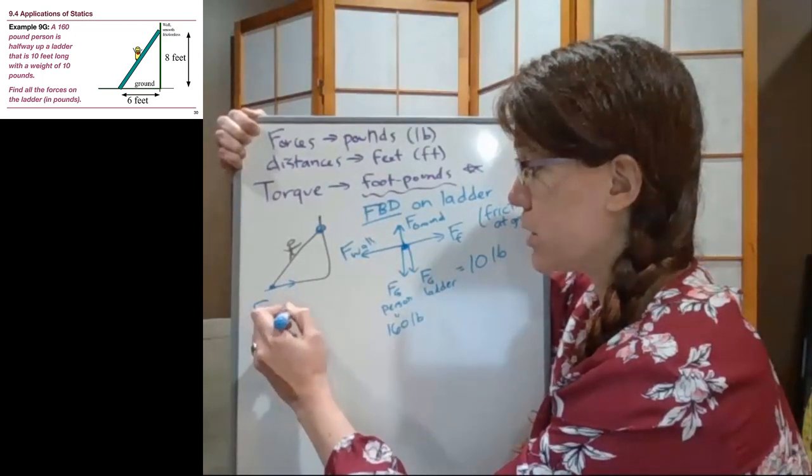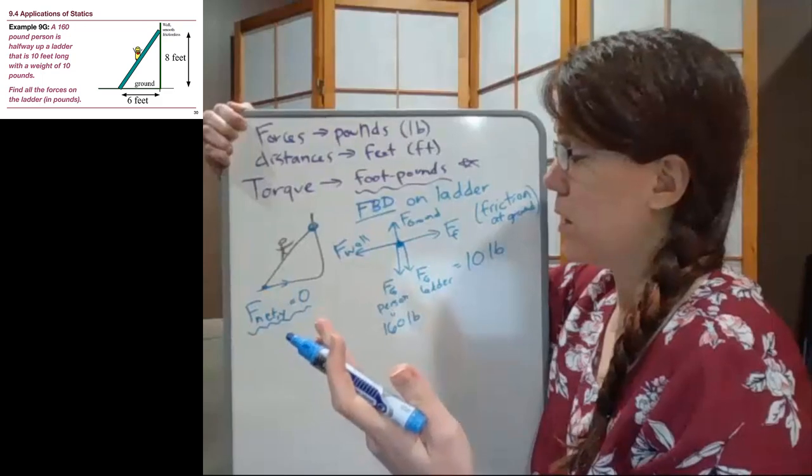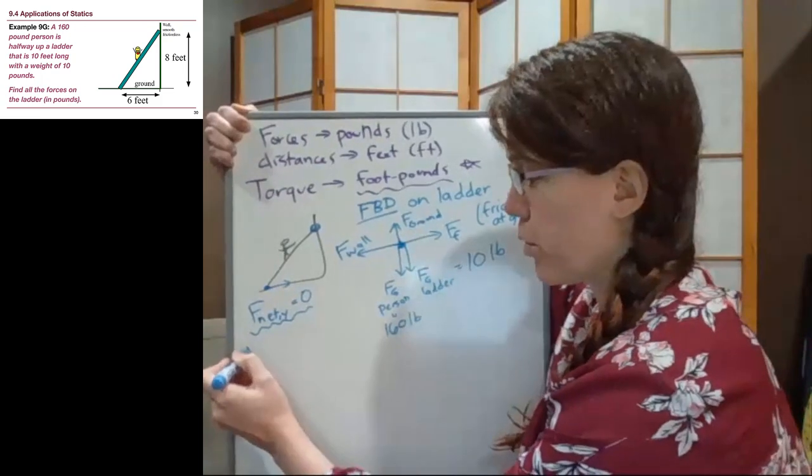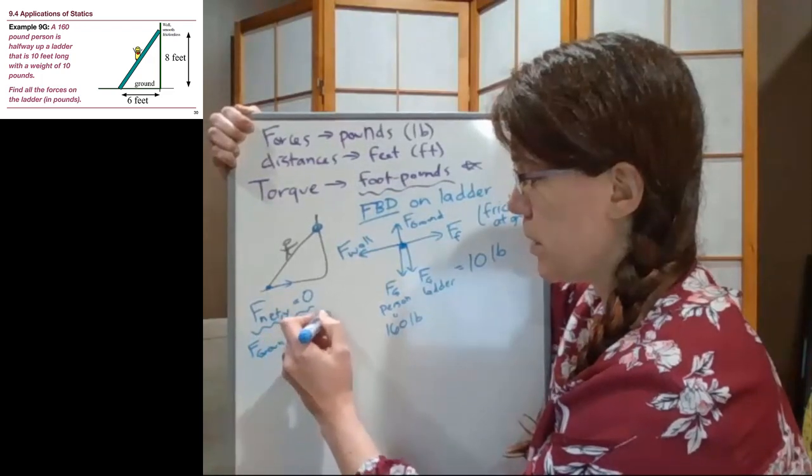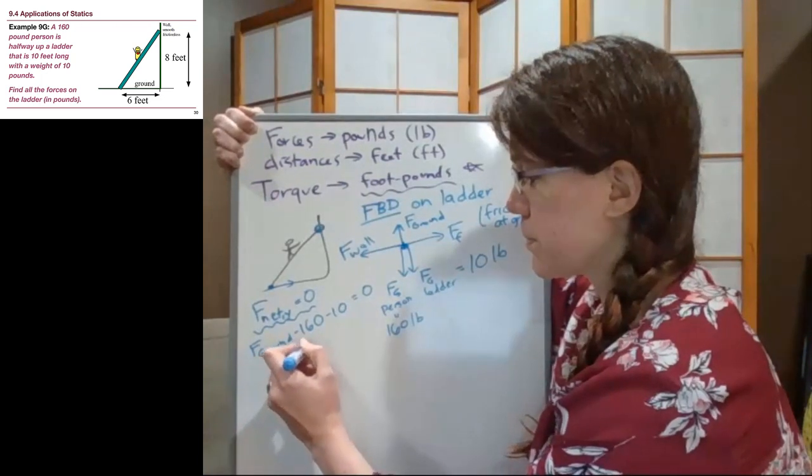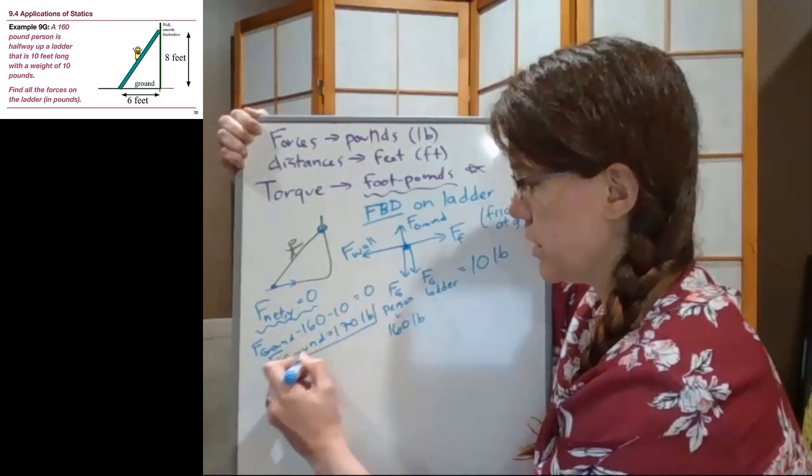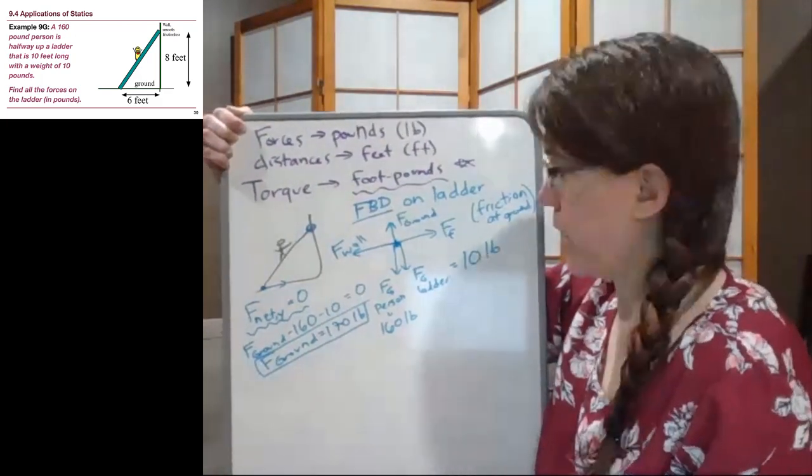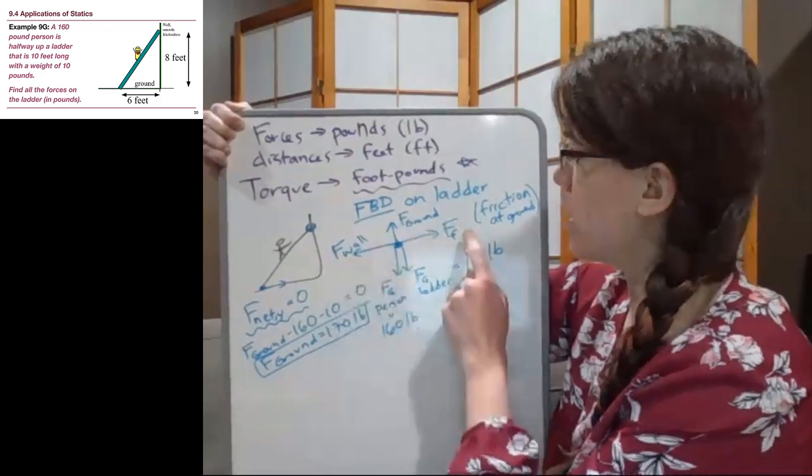Before we abandon this free body diagram, one thing I'm going to point out is already we know what the ground force is going to be. If we look at the net forces in the y-direction, that's one of our conditions for equilibrium. These two forces downward are balanced by that force of the ground up, so F_ground minus 160 minus 10 equals zero, which means that ground force is equal to 170 pounds. That one is done - we have a number for these two. We need to find the force of the wall and the force of friction.